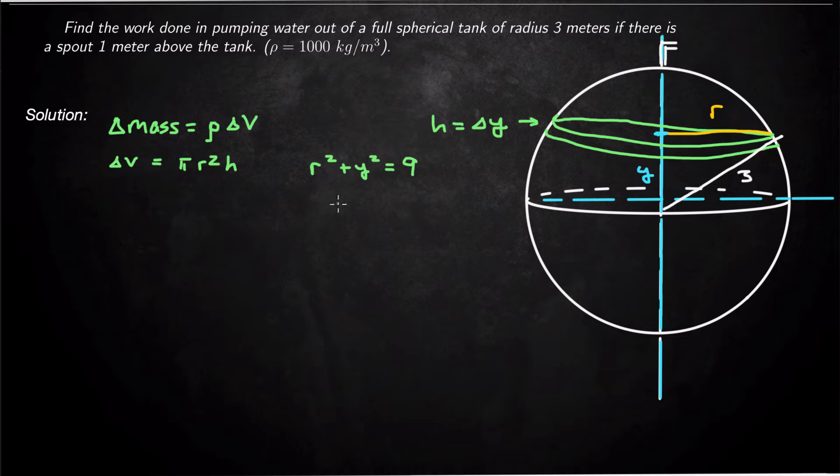So if I solve for r by itself, or actually I need r². So if I solve for r², r² is equal to 9 minus y². Now at this point we could say our volume of this little thin sheet of water is equal to π times (9 - y²) times delta y. And that's in meters cubed, so that's in cubic meters.